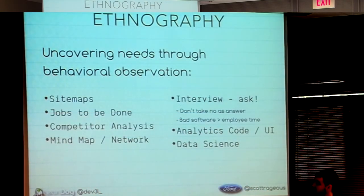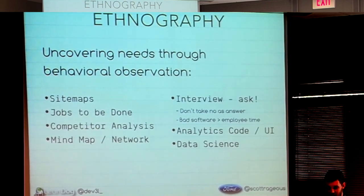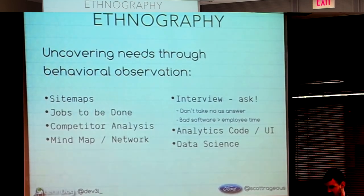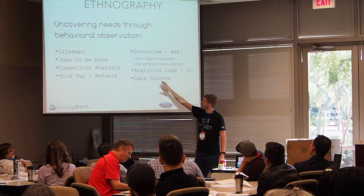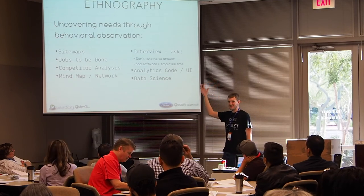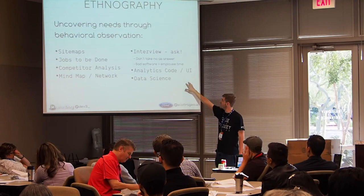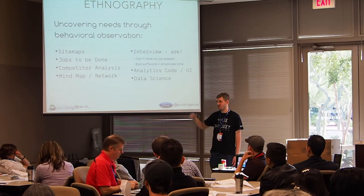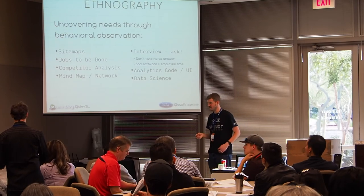We can uncover things through behavioral observations using sitemaps, jobs to be done, competitor analysis, mind mapping, networking, or actually asking the person — go out and say, 'Can I sit with you?' Melissa Perry mentioned having some organizational structure by which you have a frequency and guideline by which you interact with those customers. We can also use code analytics and new relic, but that normally tells us the what, not the why. And if you want to get real fancy with data science techniques such as reflections and neural networks, it starts getting typically higher there.